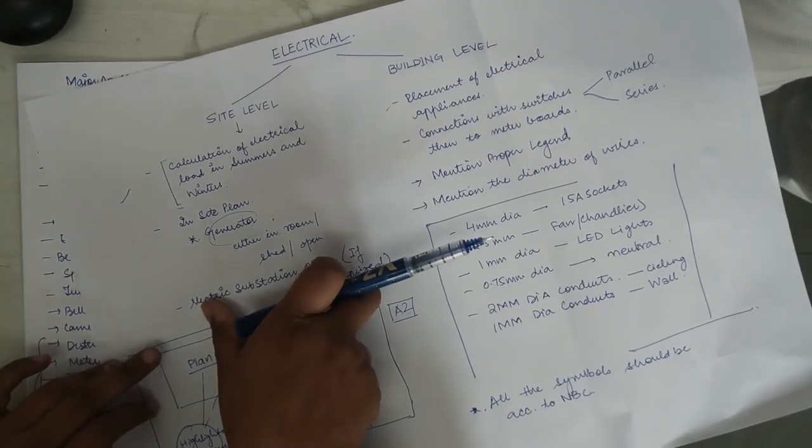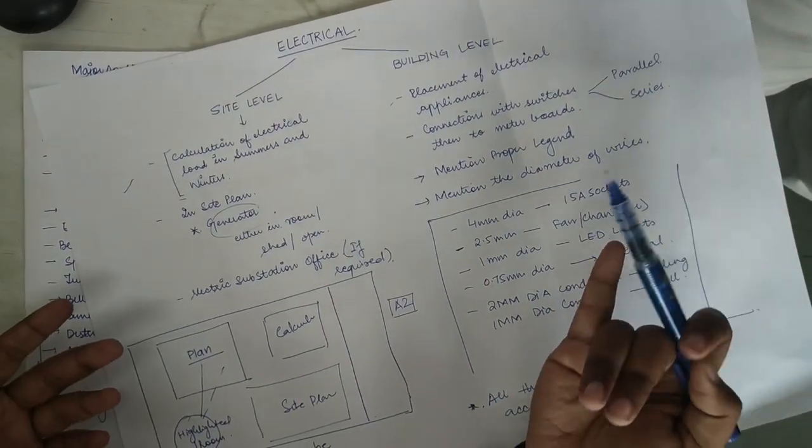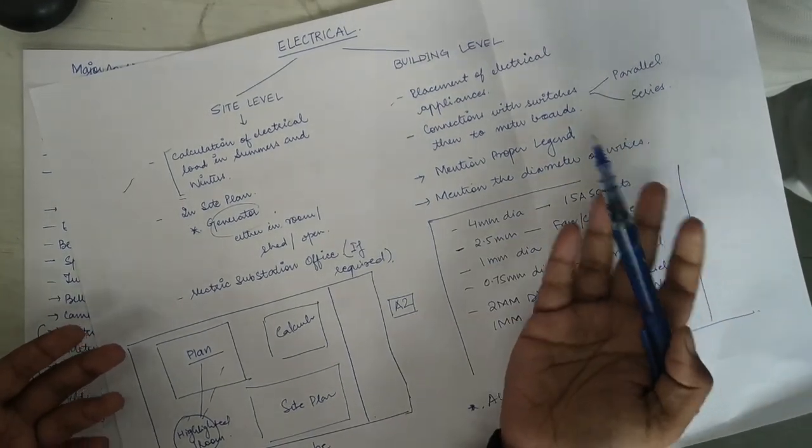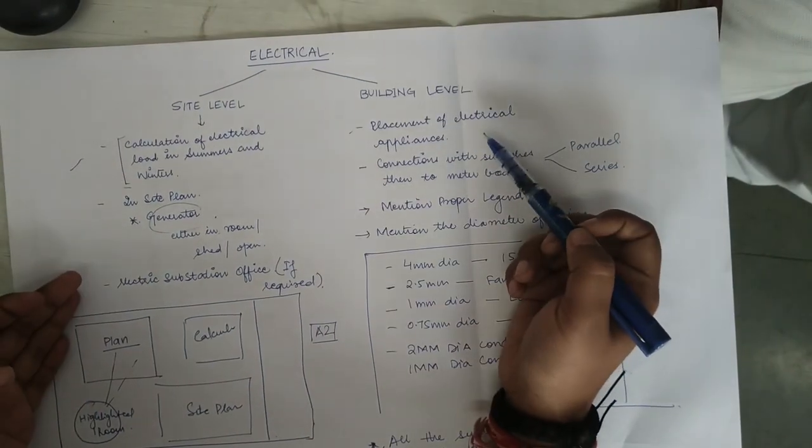Then at the site level you need to give a specific place for your generators and electric substations. If the project is very large, like if you are doing for the malls or motels, you can place it. But if you are doing for the residential buildings, it is not at all needed.